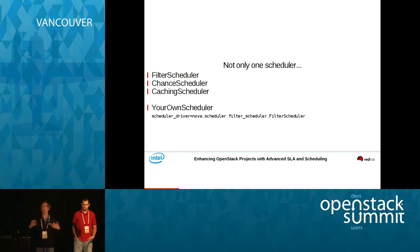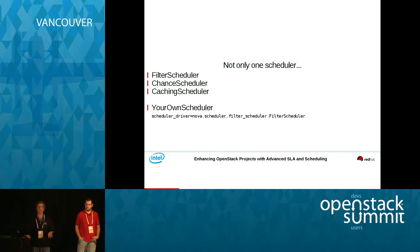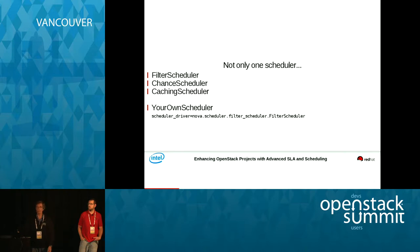The caching scheduler is an attempt to, rather than hit the database all the time, save some of that information in memory and cut down on the overhead associated with looking things up in the database. If you want to provide your own scheduler, that is perfectly feasible. There is a parameter in nova.conf where you specify where the scheduler code lives, and you can change it to your own. So if you think you've got a better scheduling idea, knock yourself out.